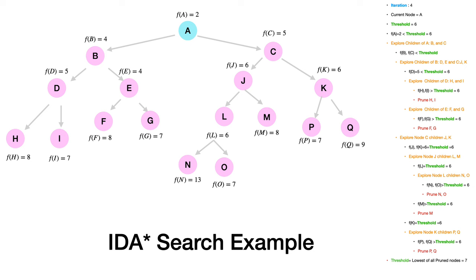The pruned nodes in iteration 4 are H, I, F, G, N, O, M, P, and Q. Among these, P has the lowest F(n) value of 7, so that becomes the threshold for iteration 5.